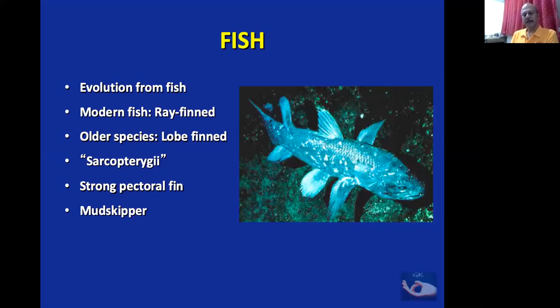These African lungfish are very interesting. They live in water, but lobe-finned fish are mainly freshwater fish. Freshwater lakes tend to dry up, so these fish had to adapt to living with air. These lungfish actually have something like our lungs and have to come out of the water every few minutes to take a gulp of air — otherwise they drown.